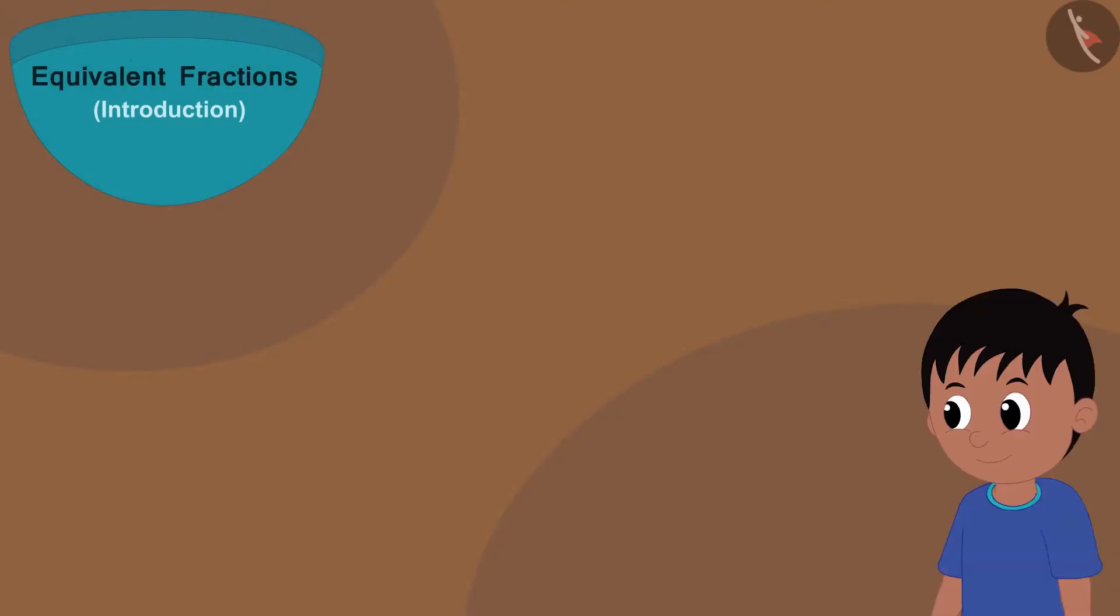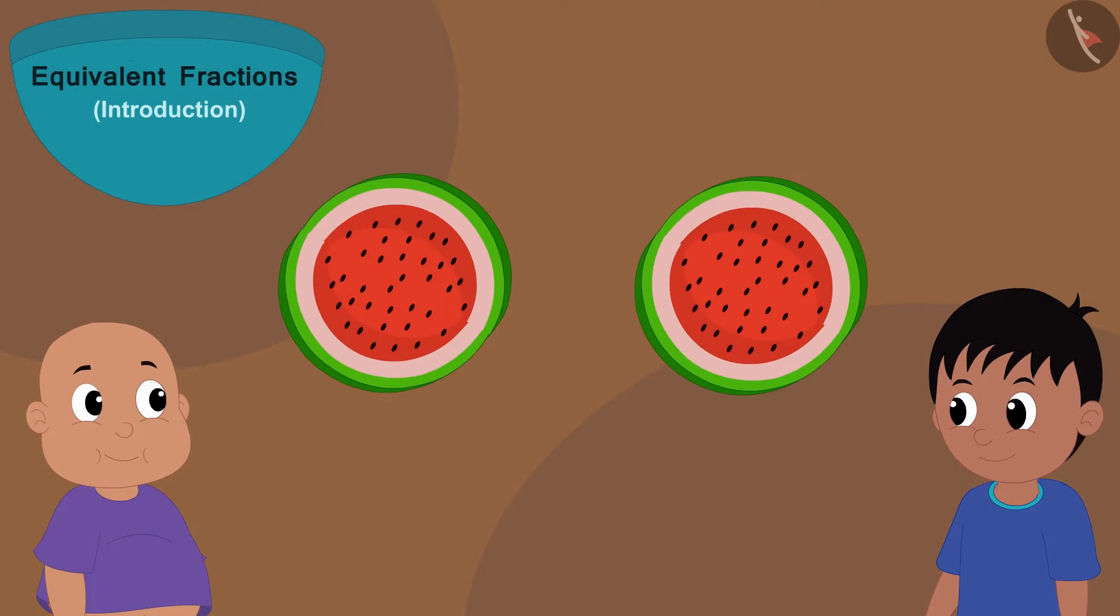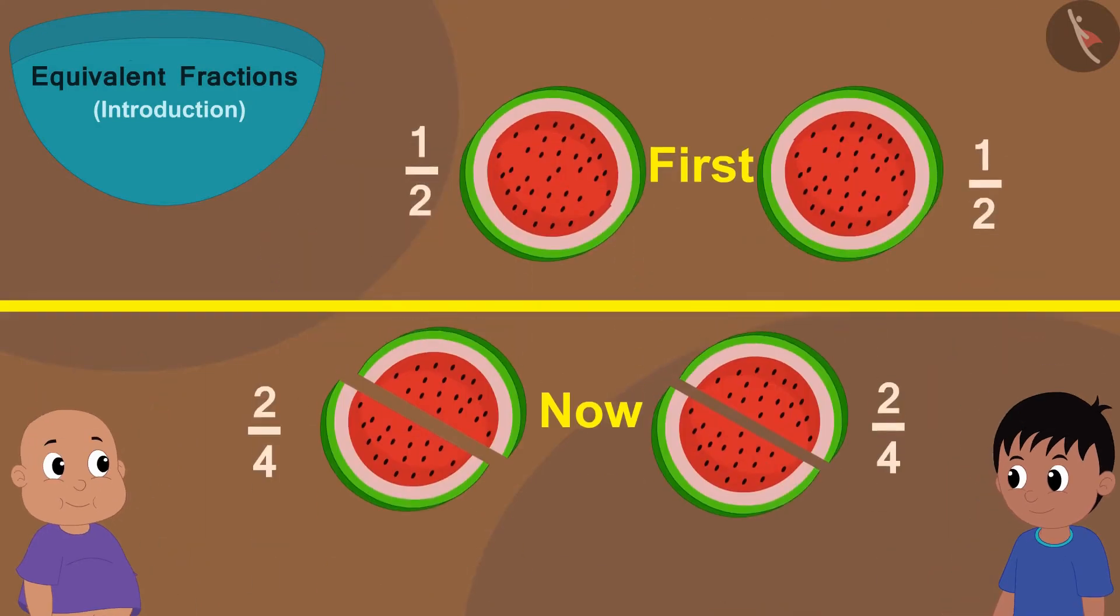Earlier, Raju and Bablu were getting one one part out of two equal parts. And now, there are four parts of the watermelon and they both are getting two two parts.